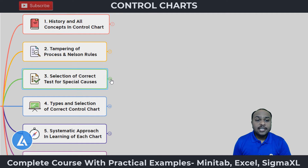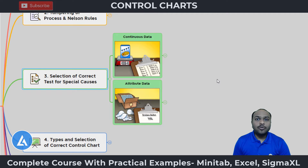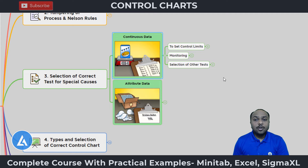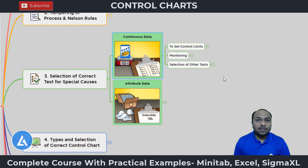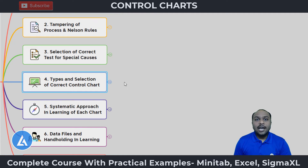The third part is about the selection of correct tests for special causes. There are eight tests for special causes and we need to select the appropriate test for identification. Using broad tests increases false signals. For continuous data, we cover how to set control limits, monitor the control chart, and select the appropriate tests. Similarly, for attribute data, we cover control limits, monitoring, and test selection.